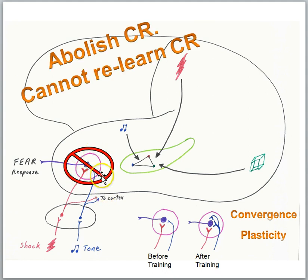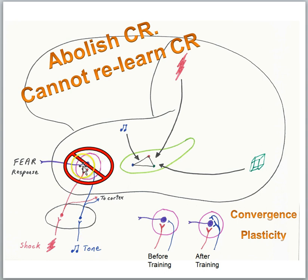When scientists damage the amygdala after training, that eliminates the conditioned response — the animal no longer shows fear to the tone. In fact, if you damage the amygdala, the animal cannot relearn an association between a tone and a shock, because you're damaging the very place where memory traces are supposed to be formed for that kind of learning. So the amygdala is understood to be the site of the memory trace for this type of simple association between a tone and a shock.